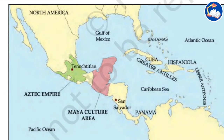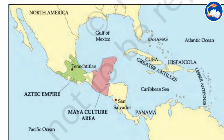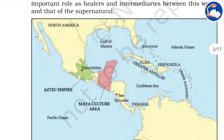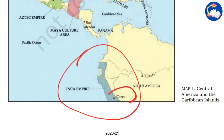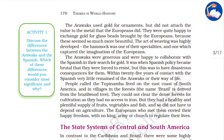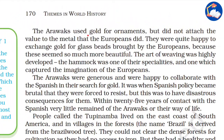Looking at the map, the Aztec Empire is here with Tenochtitlan as its capital. Then we have the Maya culture in this region — another important culture in the Americas. And then we have the Inca culture and the Inca Empire over here, with Cusco as its capital.